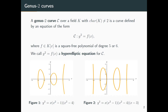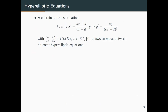If you just leave out the left part of the left picture, you get a picture of an elliptic curve again. Hyperelliptic equations are of course not unique — there are many different equations that define a curve that is isomorphic over k. You can move between different curve equations by using so-called coordinate transformations.